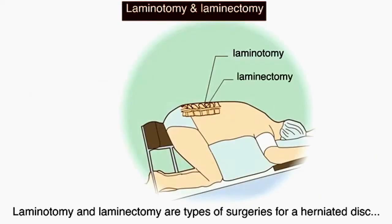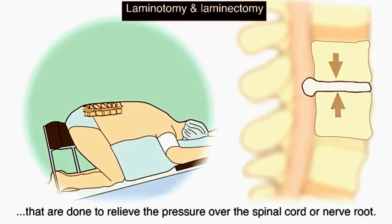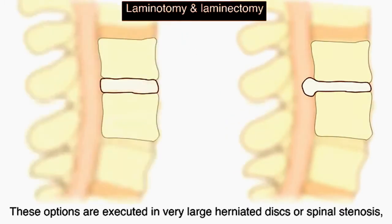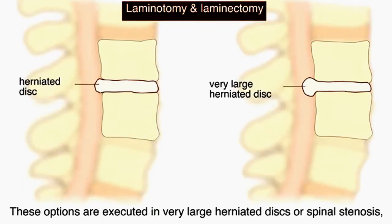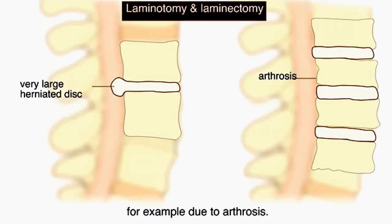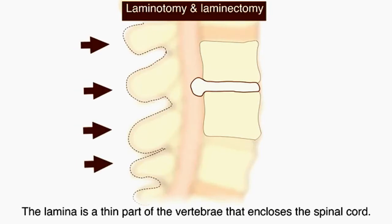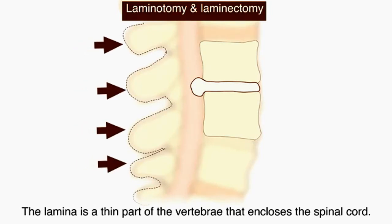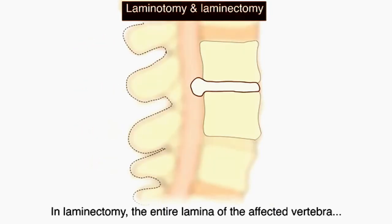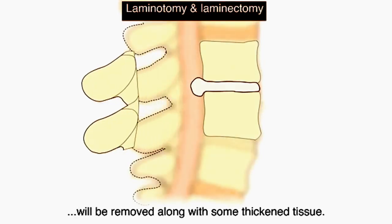Laminotomy and laminectomy are types of surgeries for a herniated disc done to relieve pressure over the spinal cord or nerve root. These options are used for very large herniated discs or spinal stenosis, for example due to arthrosis. In laminotomy, a part of the lamina is removed. The lamina is a thin part of the vertebra that encloses the spinal cord. In laminectomy, the entire lamina of the affected vertebra is removed along with some thickened tissue.